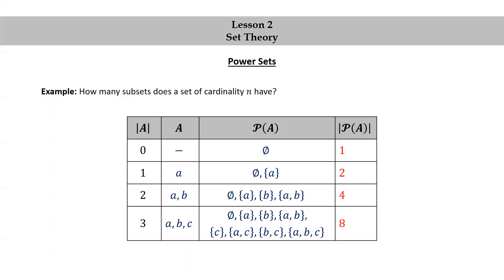Notice that 1 can be written as 2 to the 0, 2 as 2 to the 1, 4 as 2 to the 2, and 8 as 2 to the 3. If the cardinality of set A is n, then the cardinality of the power set of A is 2 to the n.